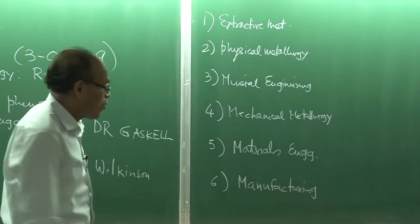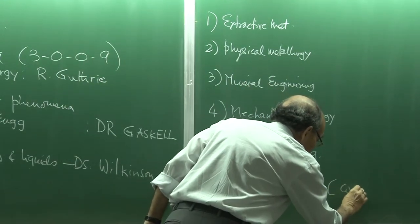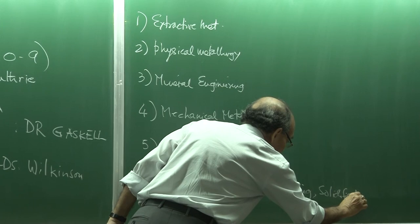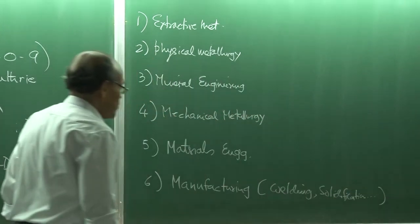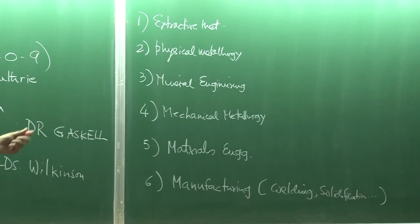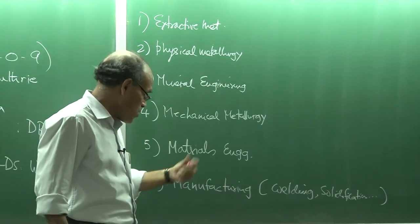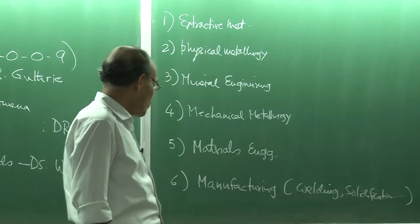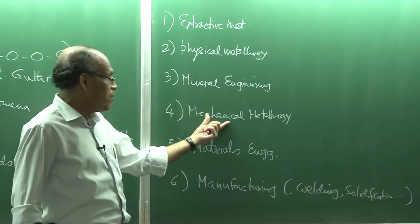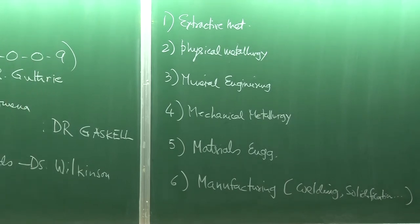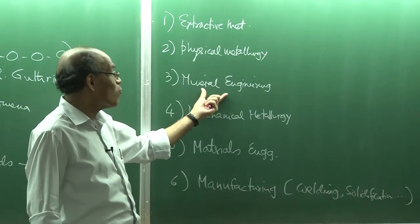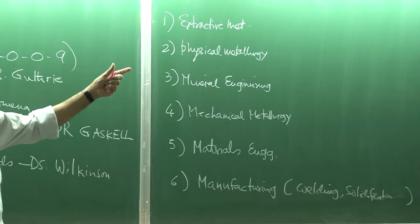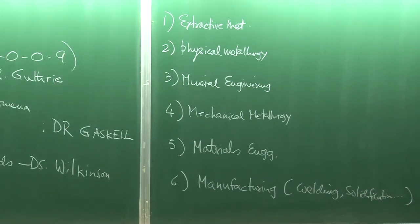Manufacturing techniques like welding, solidification, and casting come under manufacturing. Materials engineering implies designing materials — for example, thin film coating over a surface. Mechanical metallurgy talks about deformation processes. Mineral engineering talks about beneficiation of ores. Physical metallurgy covers structure-property correlations, and extractive metallurgy is the extraction of metals from their native ores.